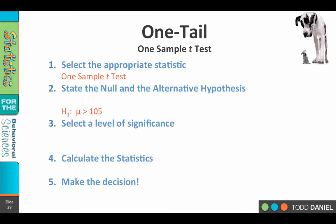We're only interested in scores that improve attention — scores that don't improve or make it worse are not interesting to us. For the null hypothesis, we consider what's left over. We've established the greater-than direction for the alternative, which leaves the equal sign — which always goes with the null — and the less-than sign. So the null hypothesis is: H₀: μ ≤ 105. Any values less than or equal to 105 are not successful outcomes; only values greater than 105 are.